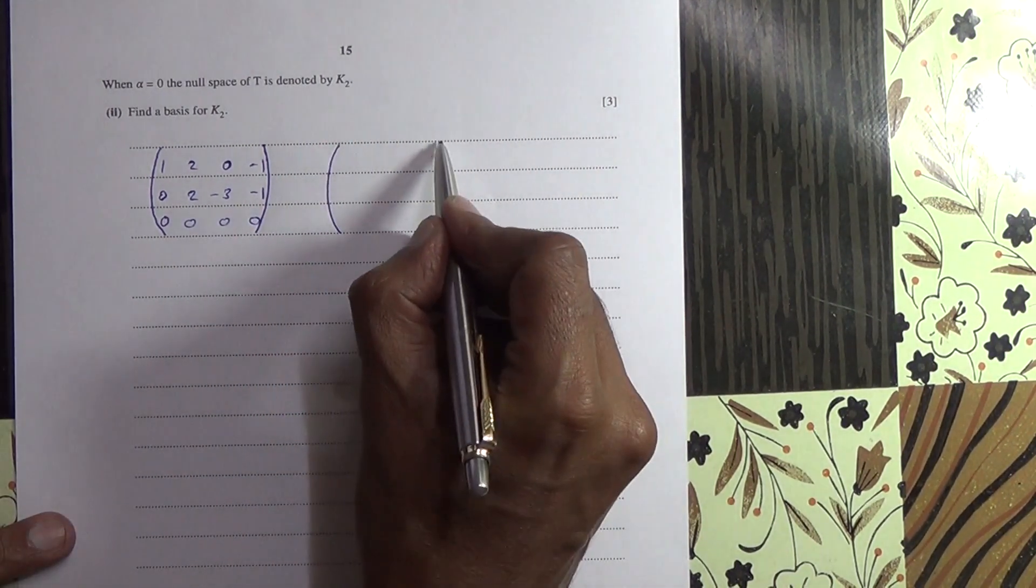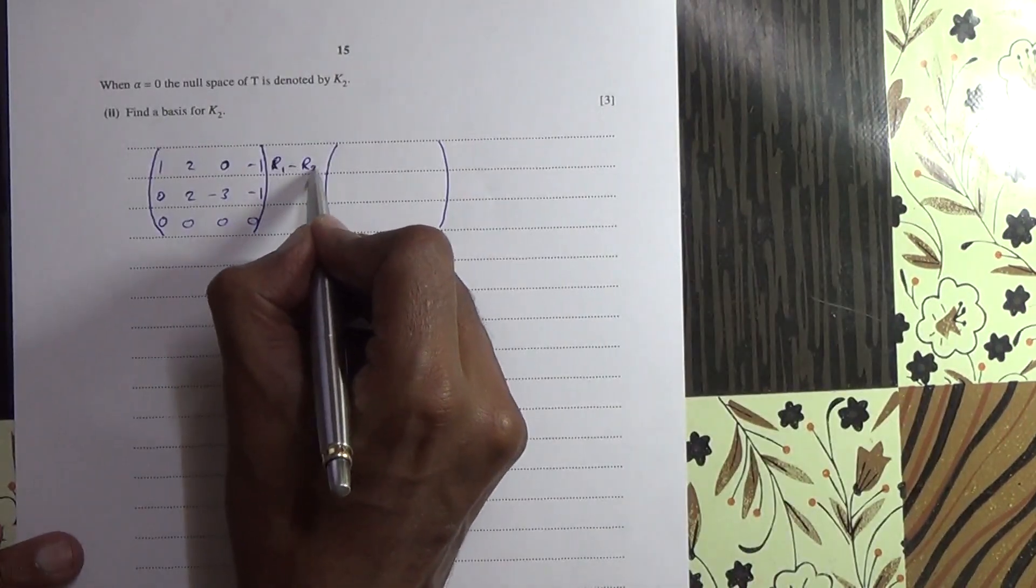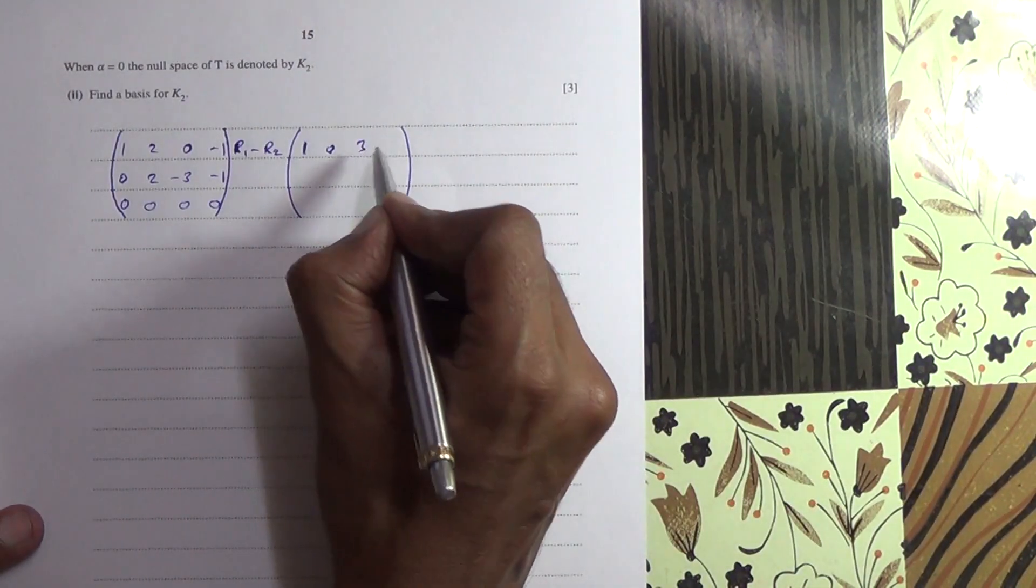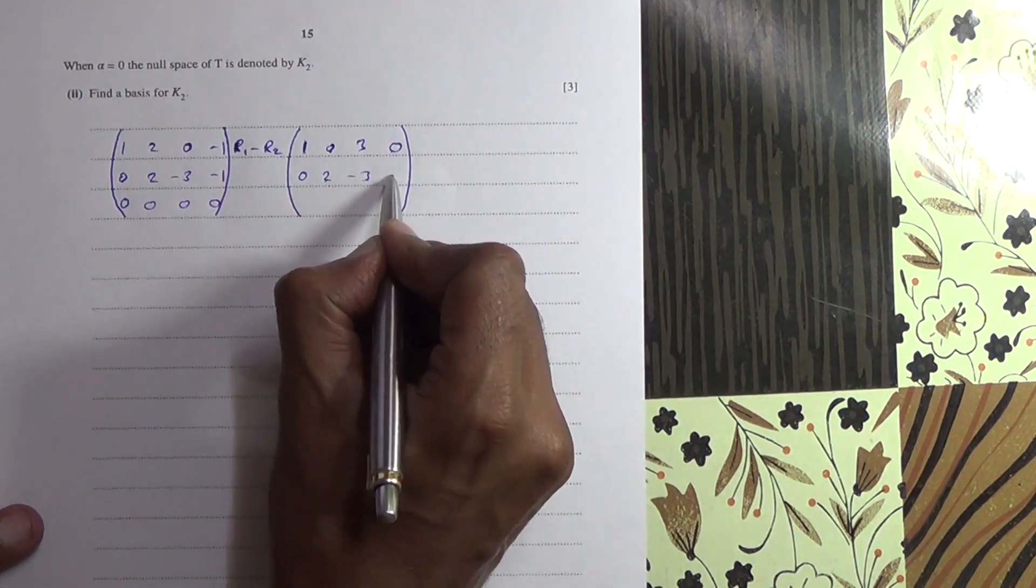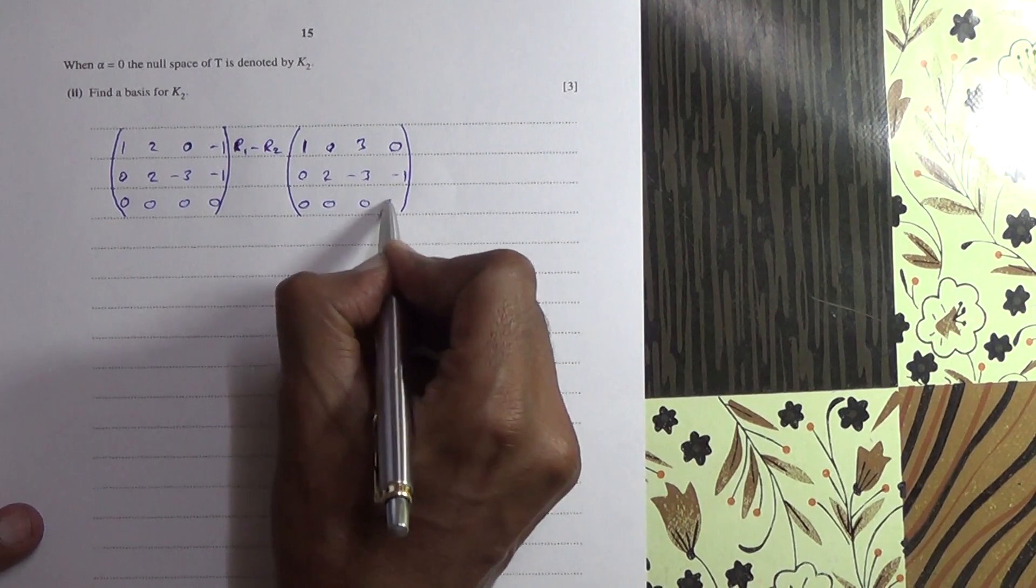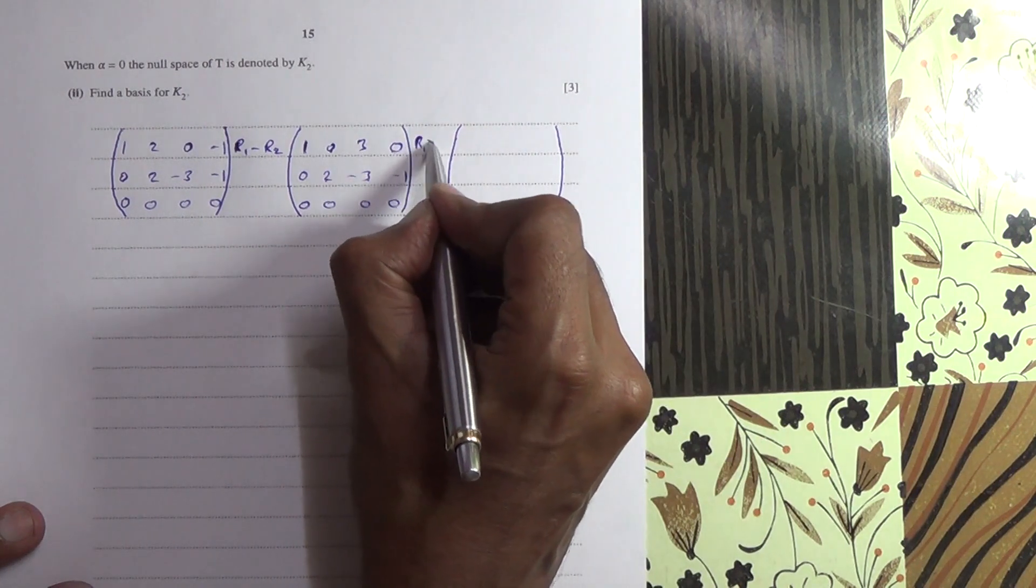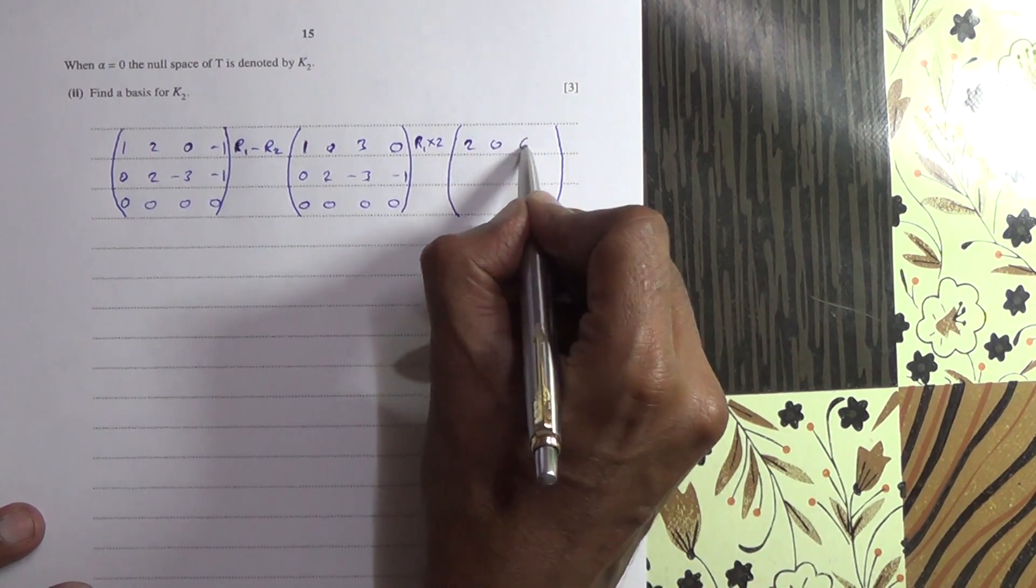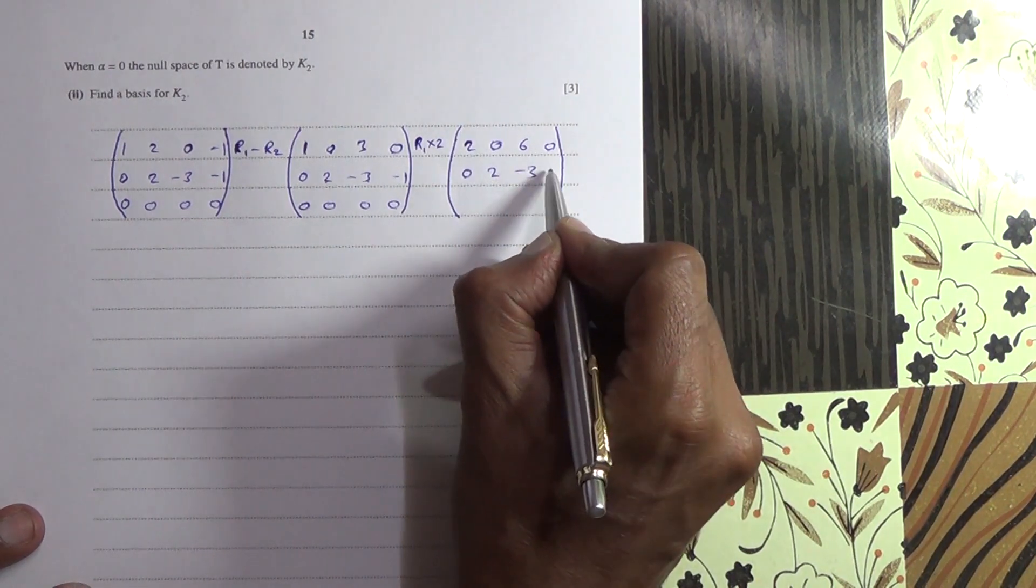And I want to reduce this to its fully reduced row echelon form. So maybe I can take row 1 minus row 2 equals to row 1. So in doing that, 1 minus 0 is 1, 2 minus 2 is 0, 0 minus minus 3 is 3, minus 1 minus minus 1 is 0. And I've got 0, 2, minus 3, minus 1, and all of that. And again, what we can do, we can multiply row 1 by 2 to make these the same. So 2, 0, 6, 0, 0, 2, minus 3, minus 1.